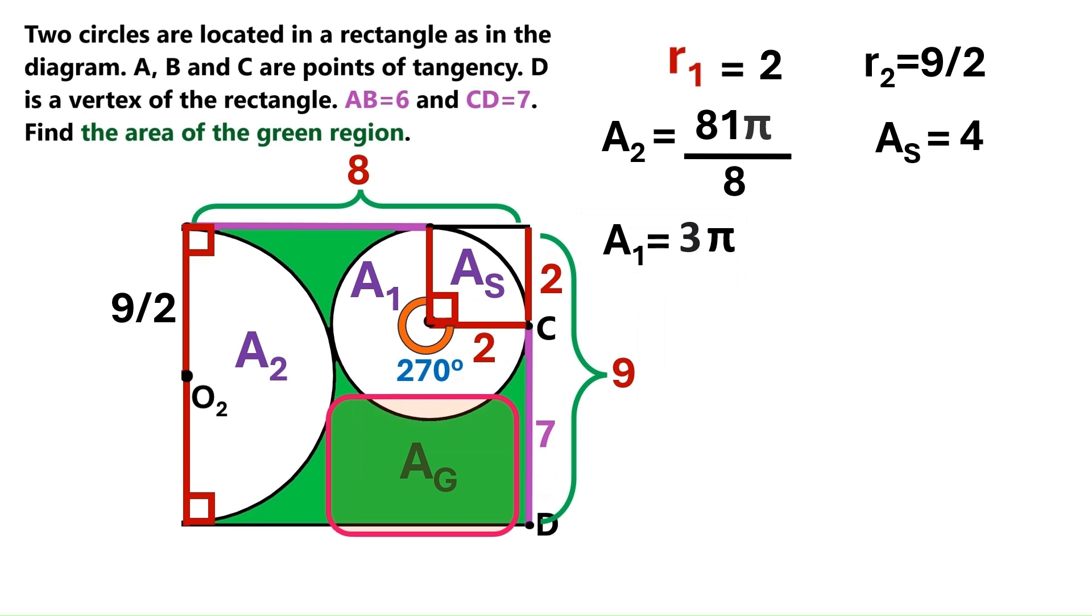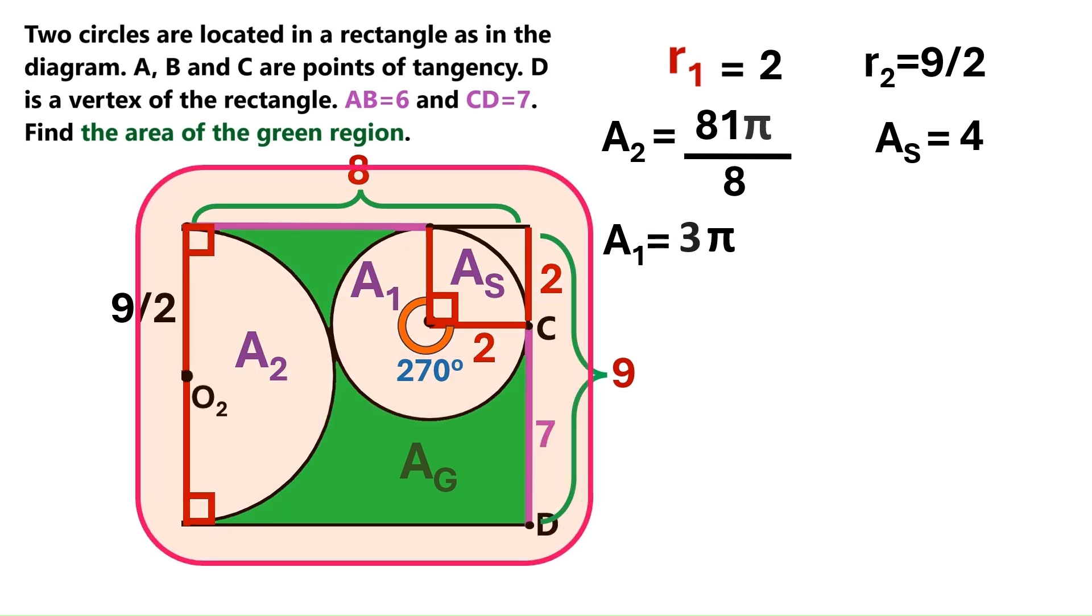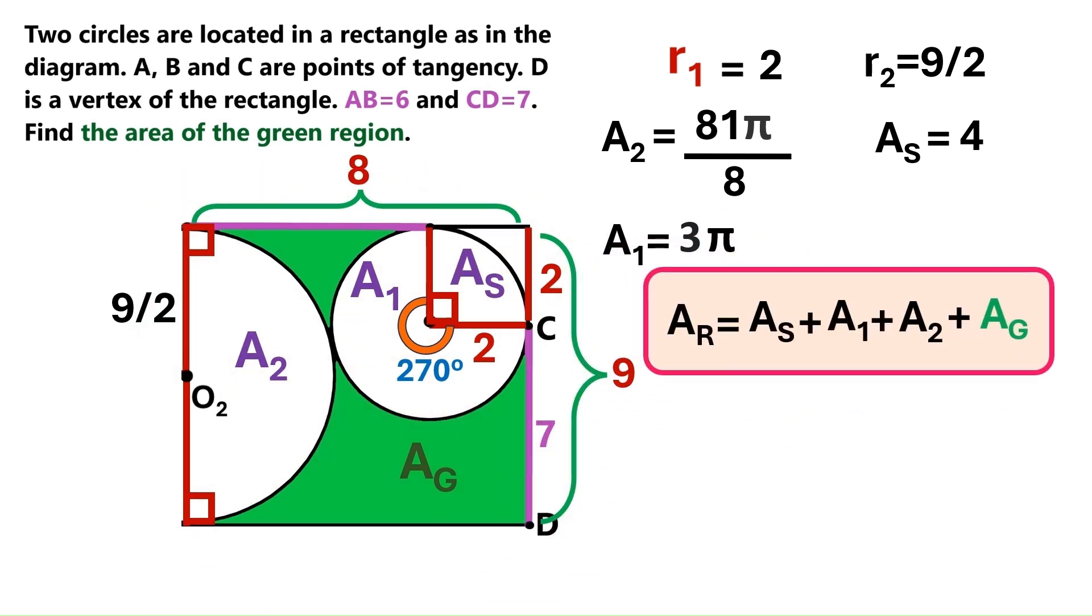Now, we'll call this green region's area, area g. Area s plus area 1 plus area 2 plus area g equals the area of this rectangle. We can put that as an equation like this. This area R is the rectangle's area, and it equals 8 times 9, which is 72.